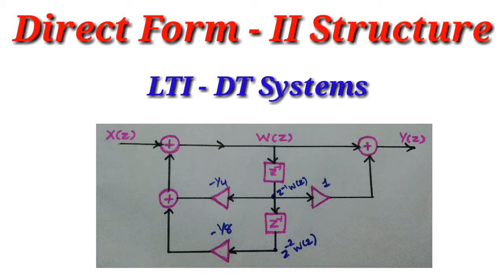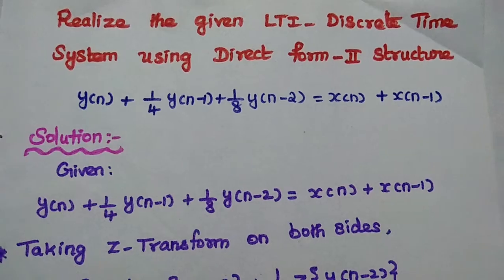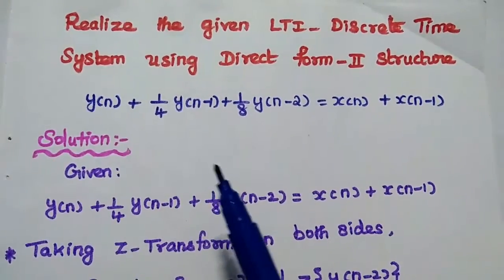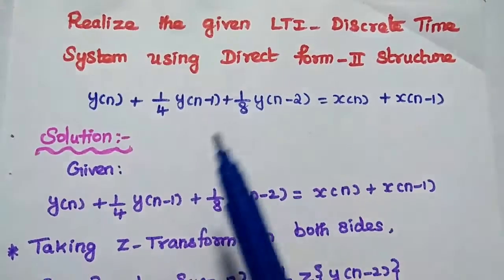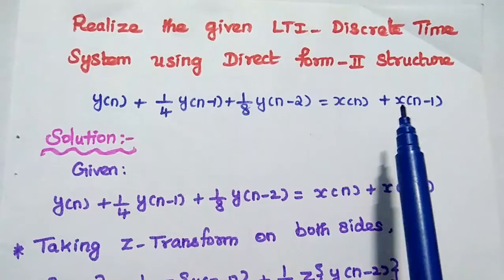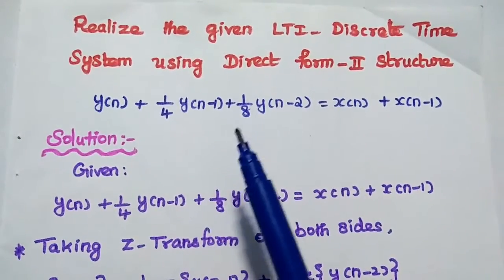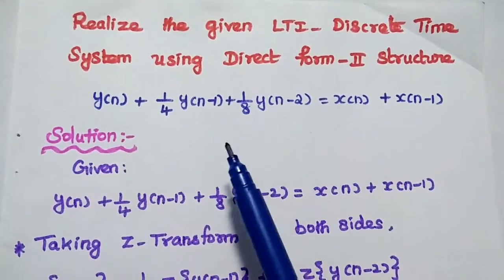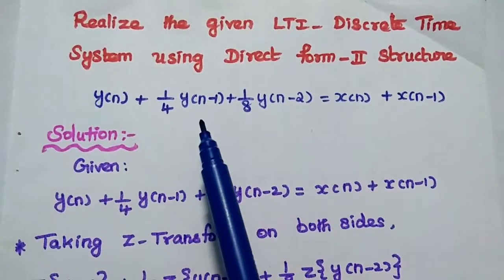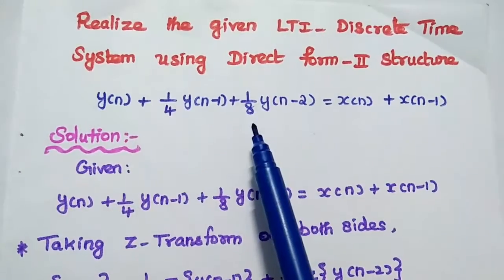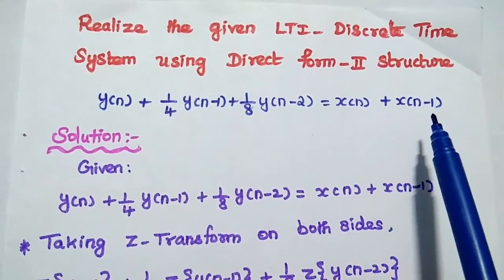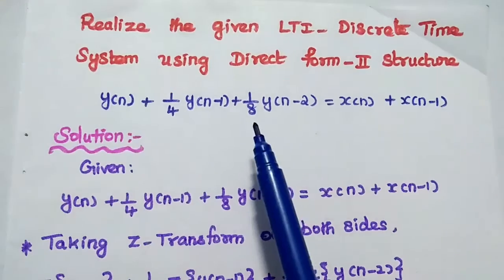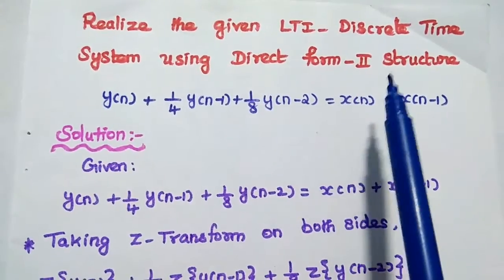Dear students, now we are going to solve important problems in Direct Form 2 structure using Z-transform. The first problem is to realize the given linear time-invariant discrete-time system using Direct Form 2 structure.